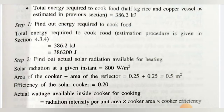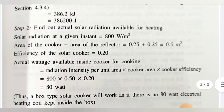Step number two: find out the actual solar radiation available for heating. The actual solar radiation per day is on average 800 W/m². The area of the cooker plus the area of the reflector is 0.25 + 0.25 = 0.5 m². The efficiency of the solar cooker is 20%.